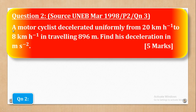Now let's go to the solution for question two. Question two says that a motorcyclist decelerated uniformly from 20 kilometers per hour to 8 kilometers per hour. Find his deceleration in meters per second squared. The initial velocity is 20 km/h, the final velocity is 8 km/h, and the distance moved is 896 meters.